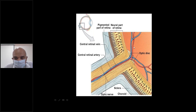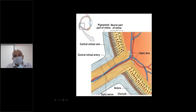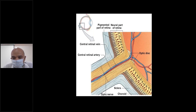Once the branching of the retinal arteries occurs, it proceeds further and branches out, forming smaller arterioles and capillaries. The venous drainage from the retina occurs mainly from the veins — tributaries contribute to form the veins. In all four segments — superotemporal, inferotemporal, superonasal, and inferonasal — they all join and combine to form the central retinal vein. This is the basic anatomy you should understand.